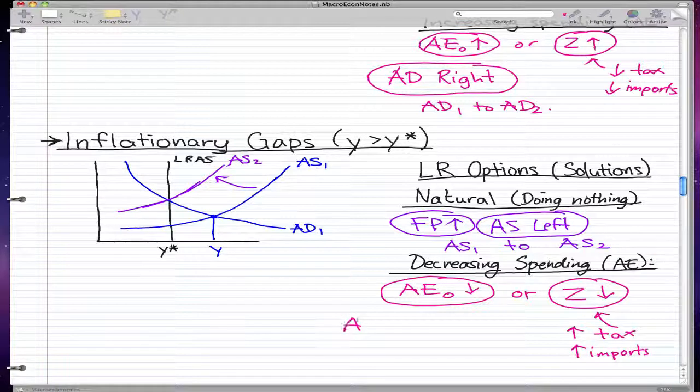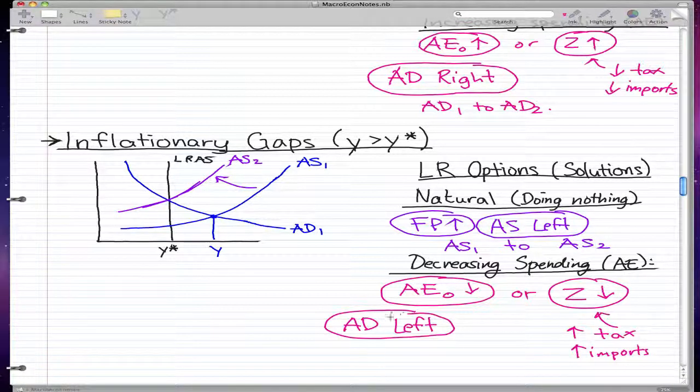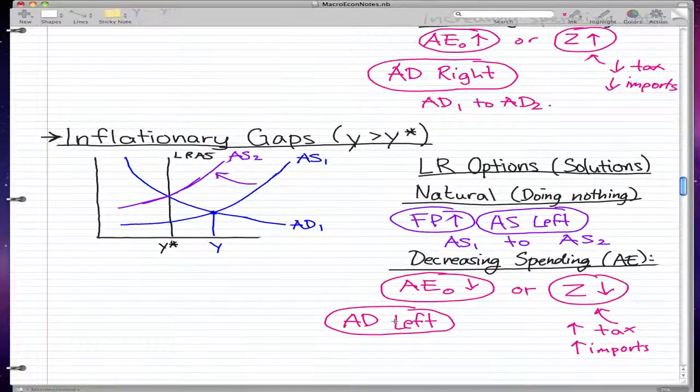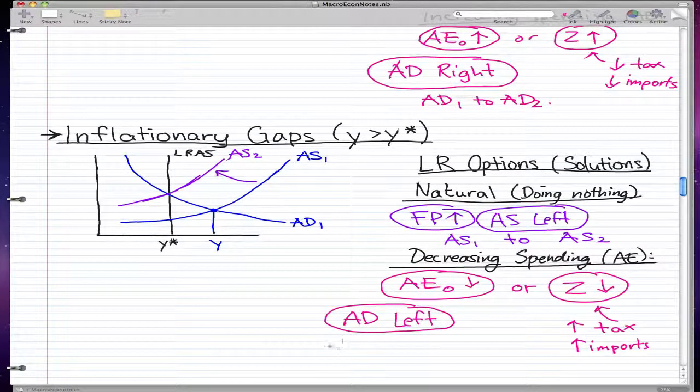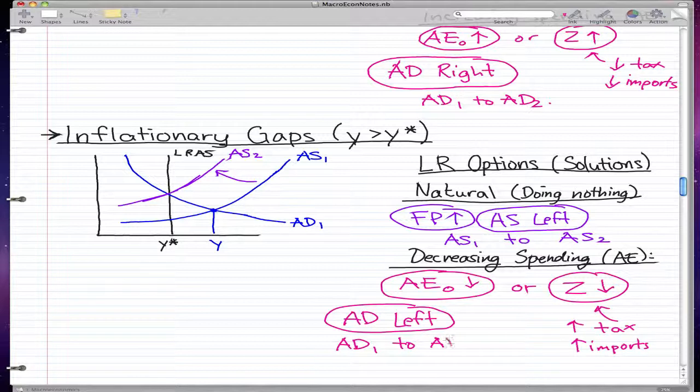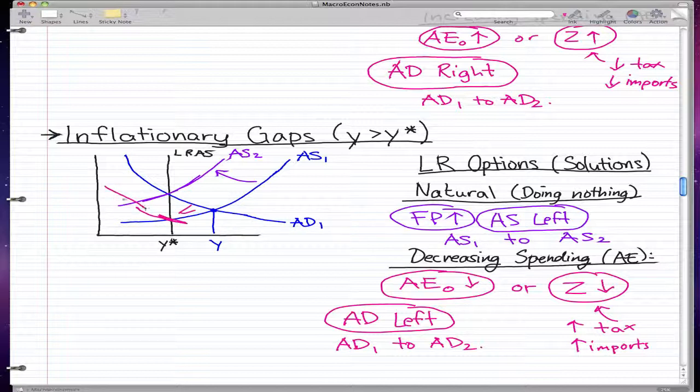When this happens, AD moves left, because when there are high taxes and there are a lot of imports, then people pretty much don't want to spend because they have to pay too much to get too little. So AD moves left, and AD goes from AD1 to AD2, and you know where AD2 will go. AD2 will just go here. It will move left, so this was AD1, so it pretty much shifts down. This will be our AD2.